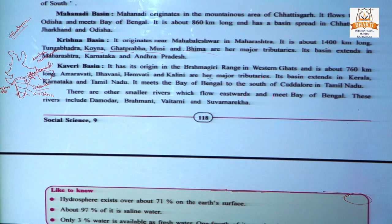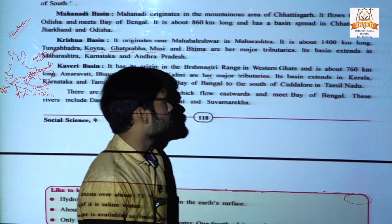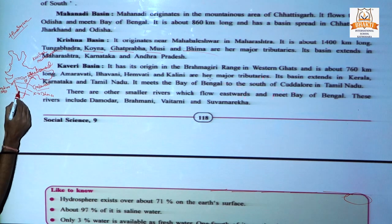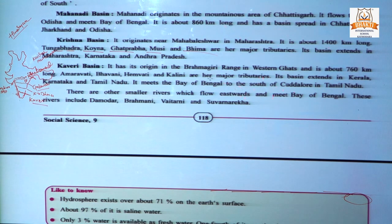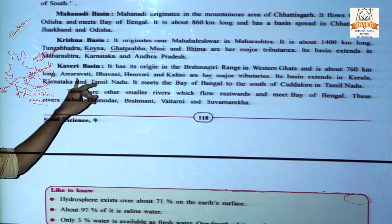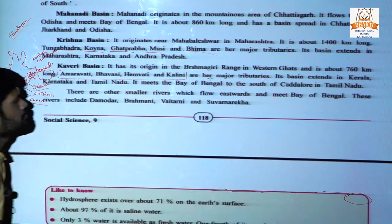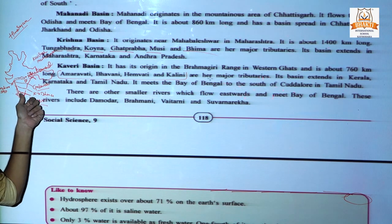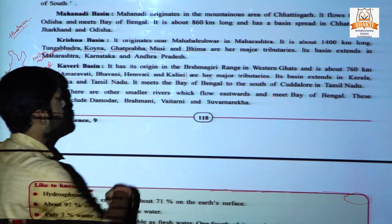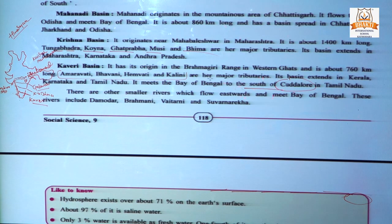Kaveri Basin: Kaveri has its origin in the Brahmagiri range in the Western Ghats. It is 760 km long. Its major tributaries are Amravathi, Bhavani, Hemvathi, and Kalini. Its basin extends in Kerala, Karnataka, and Tamil Nadu. It meets the Bay of Bengal to the south of Cuddalore in Tamil Nadu.